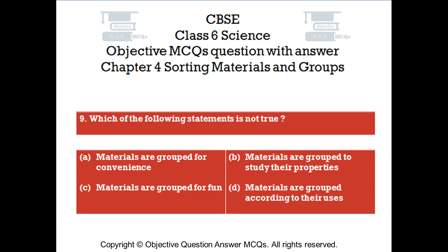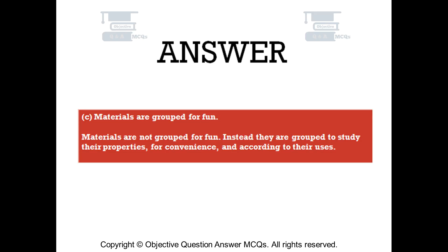Question number 9. Which of the following statements is not true? Option A: Materials are grouped for convenience. Option B: Materials are grouped to study their properties. Option C: Materials are grouped for fun. Option D: Materials are grouped according to their uses. The right answer is Option C. Materials are not grouped for fun; instead they are grouped to study their properties, for convenience, and according to their uses.